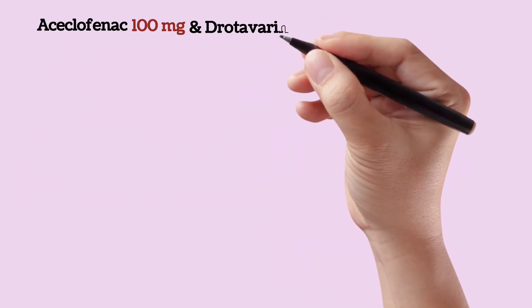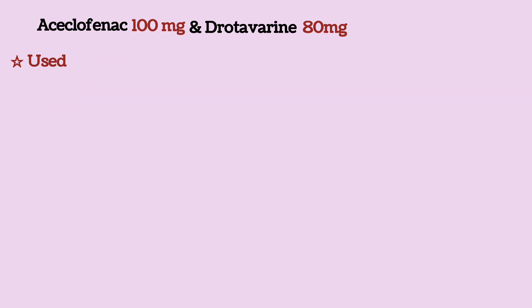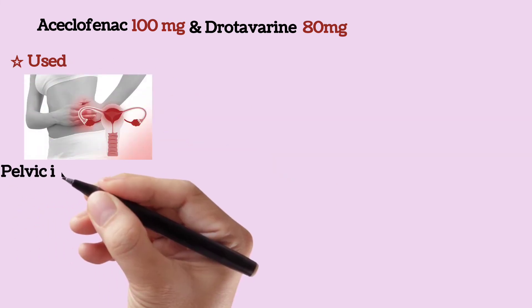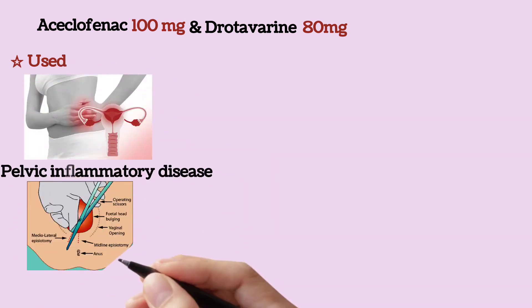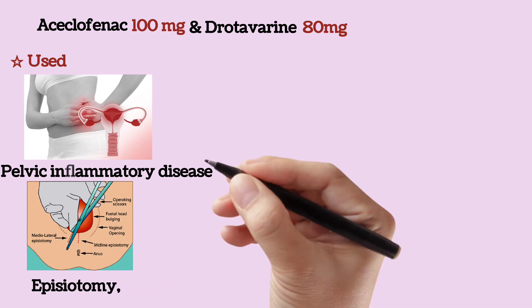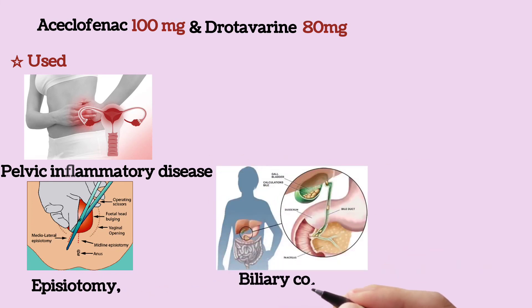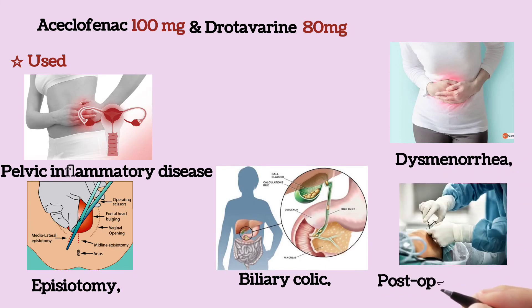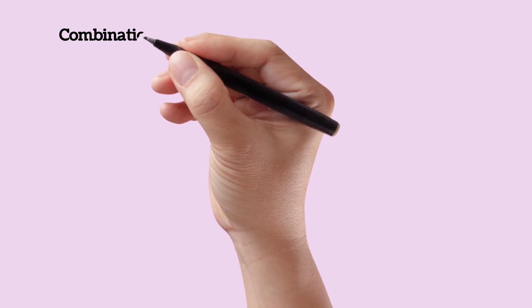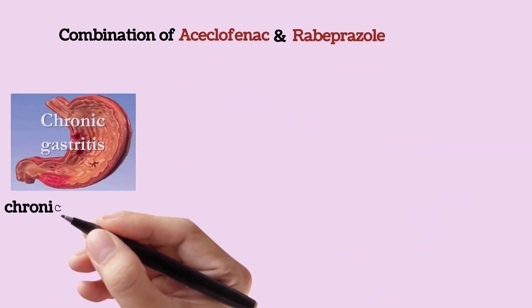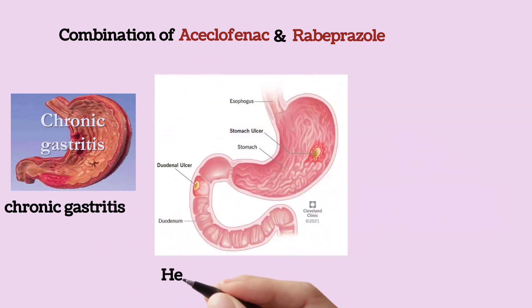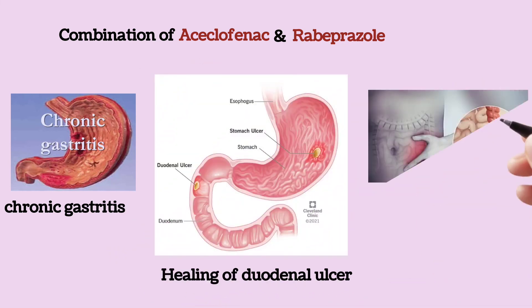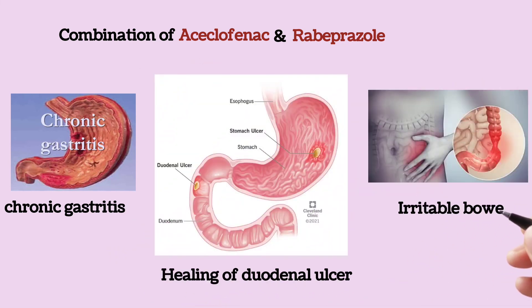Next, aceclofenac and drotaverine is used in pelvic inflammatory disease, episiotomy, biliary colic, dysmenorrhea, and post-operative spasm. The combination of aceclofenac and rabeprazole is used in chronic gastritis, healing of duodenal ulcer, and irritable bowel syndrome.